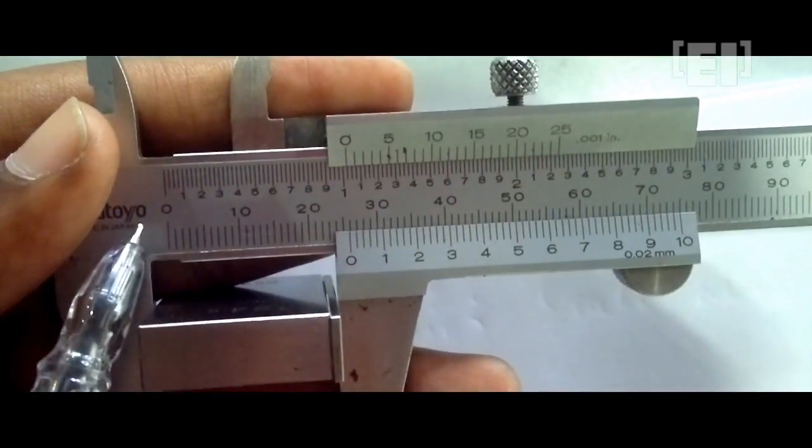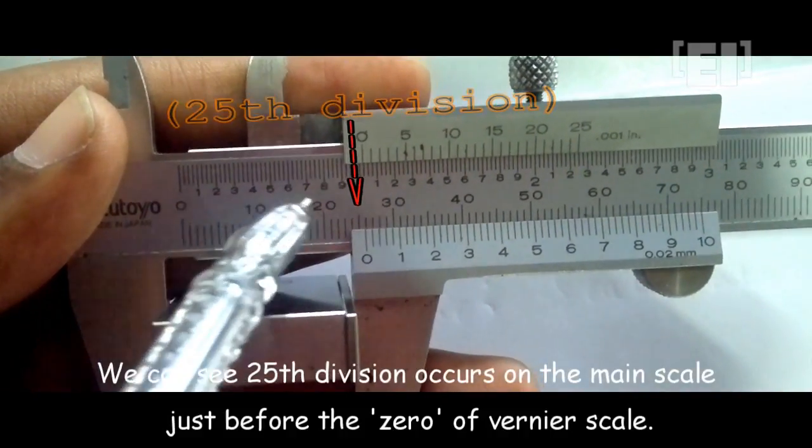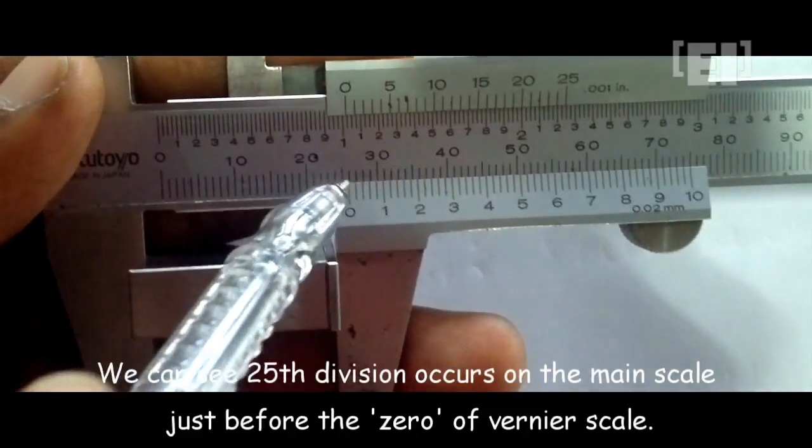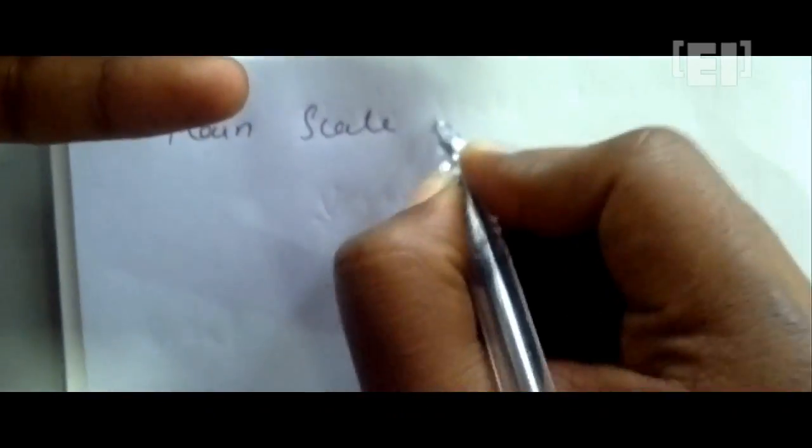We'll carefully note down the number of divisions on the main scale occurring just before the zero of the vernier scale. This will be the main scale reading.